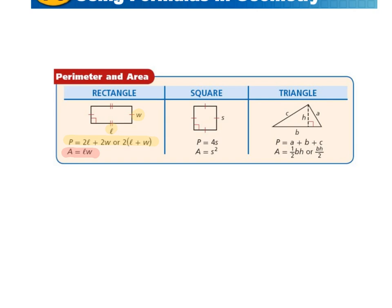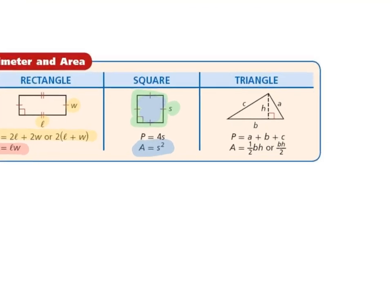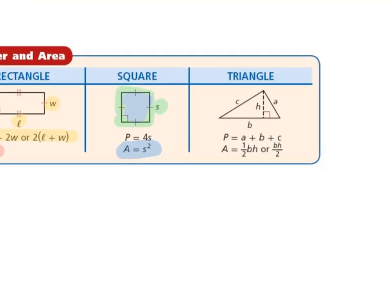For a square, the perimeter is 4S, where S is one side length, as if we added all four sides together. The area of a square is S squared. The perimeter of a triangle is A plus B plus C, and the area is one-half base times height, or base times height divided by 2.